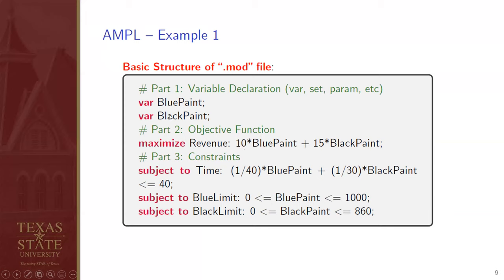The colon separates the declaration from the formula: 10 times blue_paint plus 15 times black_paint. The constraints use subject to. The first constraint is named time — subject to time is the instruction from the software; time is the user-provided name. You can call it C1, C2, etc., or give it a descriptive name like time. The equation must be less than or equal to 40. The other two constraints represent demand limitations.